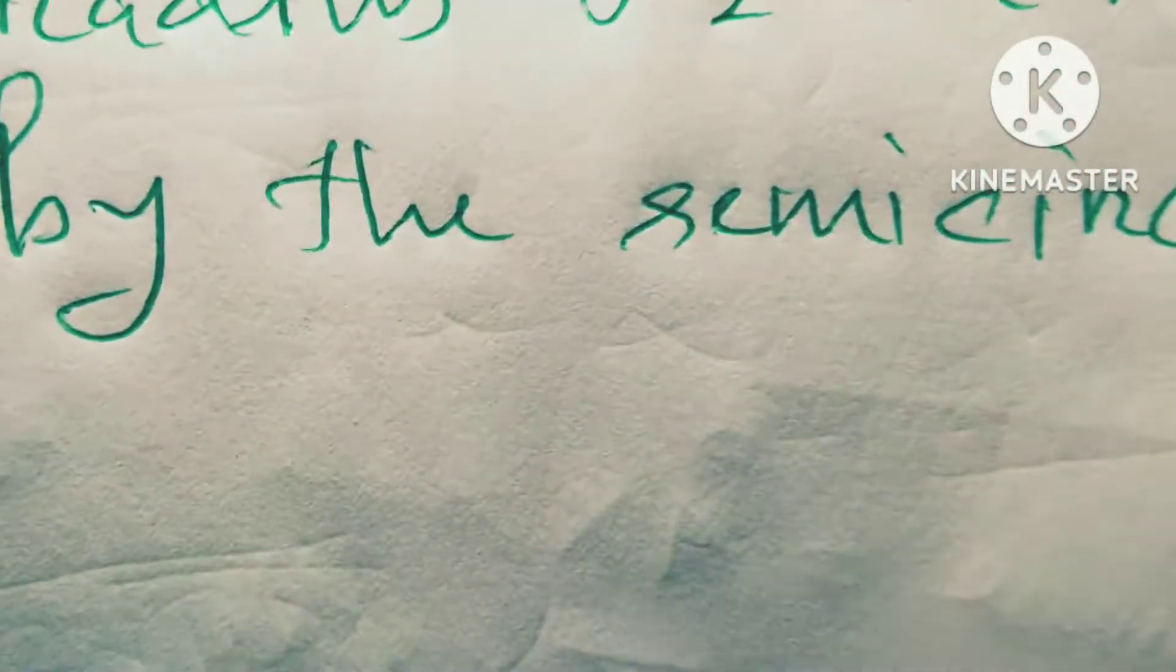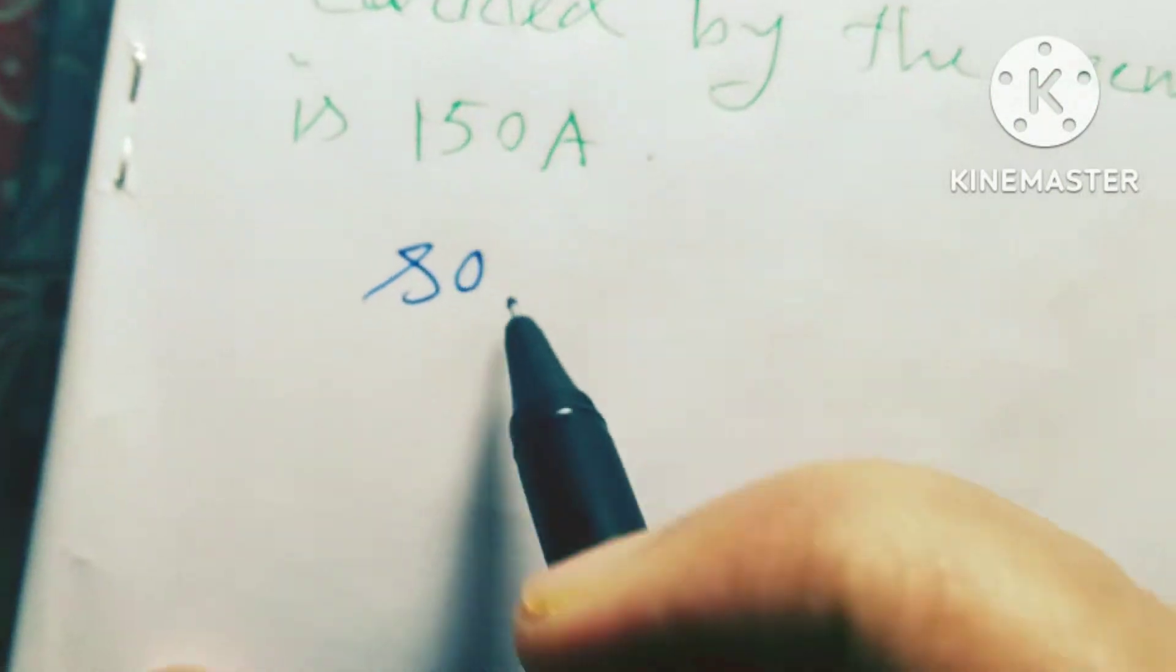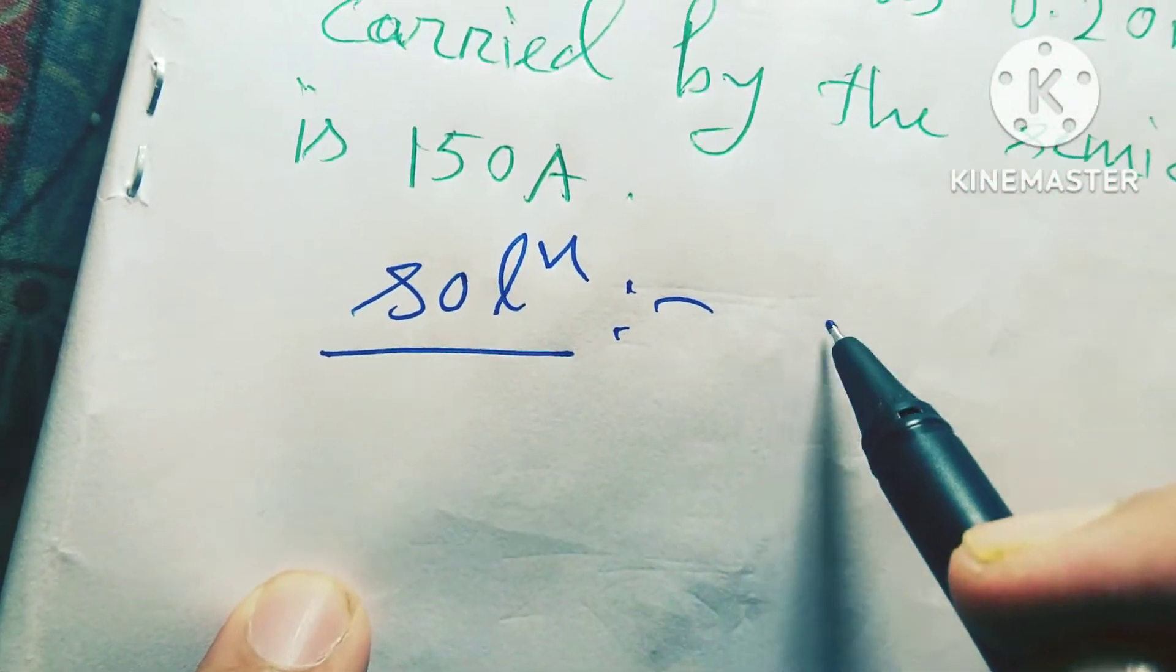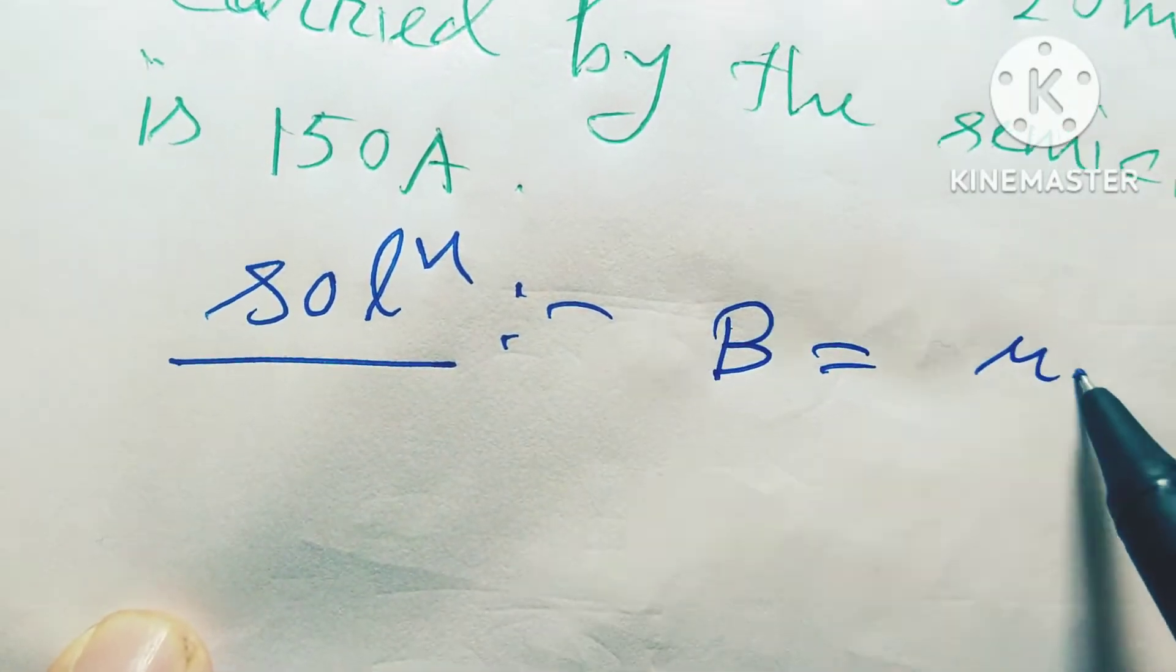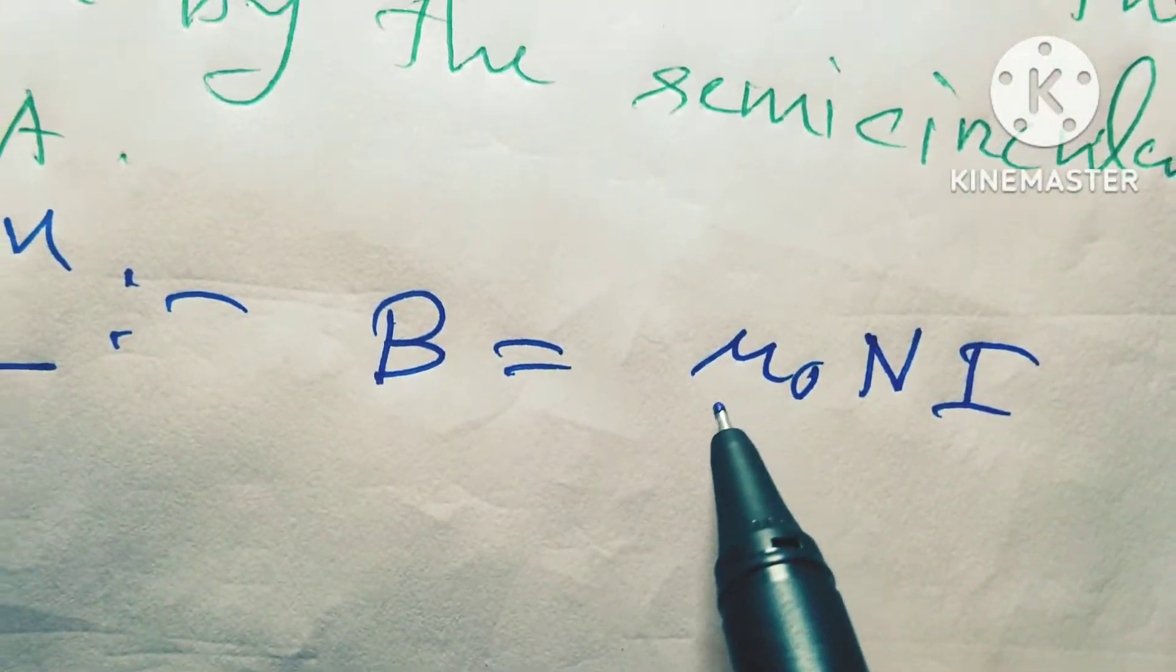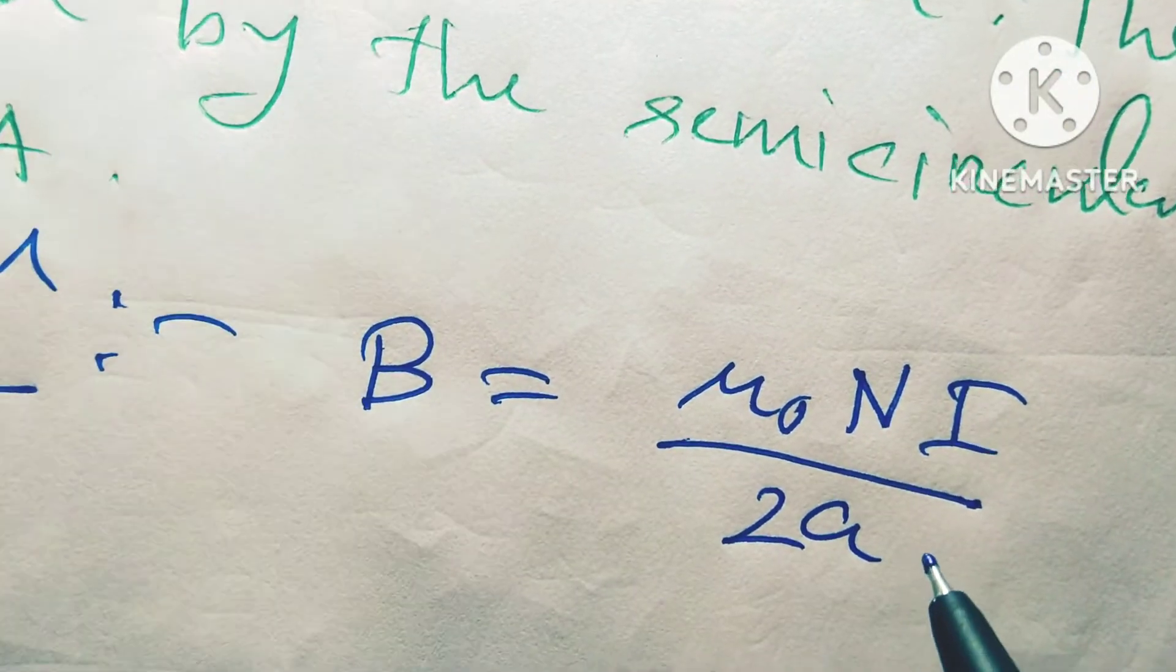So friends, this problem is based on Biot-Savart law solution. The problem is based on Biot-Savart law, B is equal to μ₀ divided by n i divided by 2a. This is the formula.